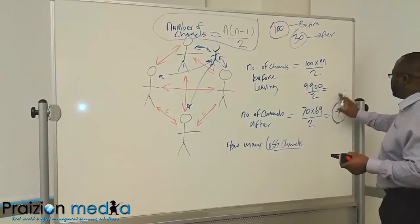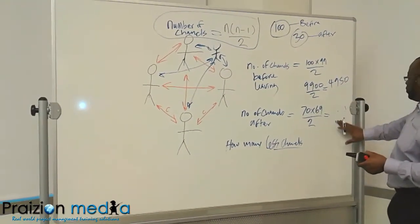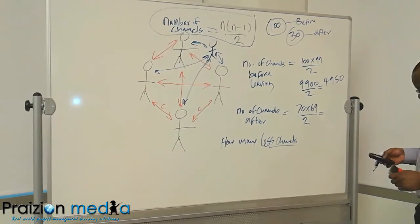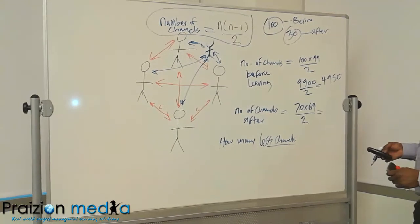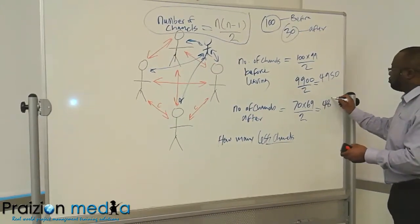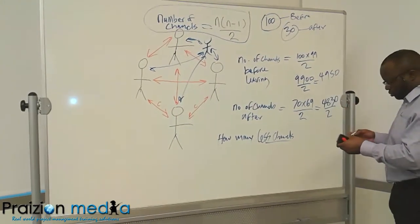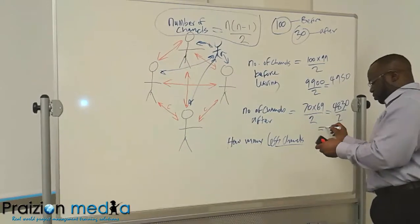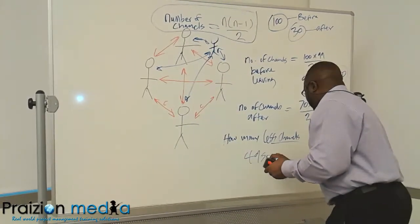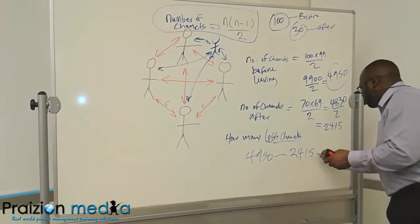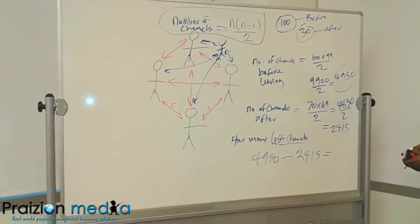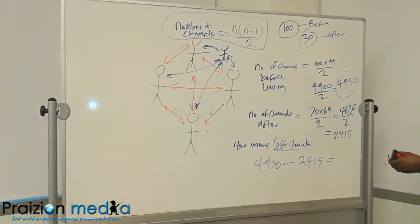So 4,950 is what we have here. What we have here is 70 times 69 over 2, which is 4,830 divided by 2, and that gives 2,415. So we have 4,950 minus 2,415, which equals 2,535.